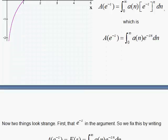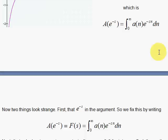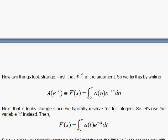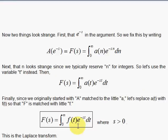We have two things that look a little strange so far — this argument over here. Let's just make that capital F of s, some capital F function of s. And since n is usually used for integers, let's replace n with t in three places. Finally, since this is capital F, let's make this little f so it looks nice. And voilà — that is the Laplace Transform, with s of course being greater than 0. We've done it. Thank you.